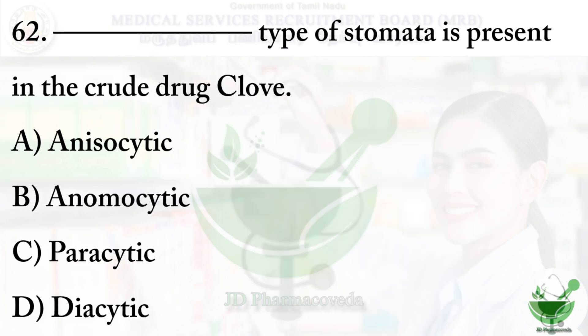Question number 62: what type of stomata is present in the crude drug clove? Option A: anisocytic. Option B: anemocytic. Option C: paracytic. Option D: diacytic.